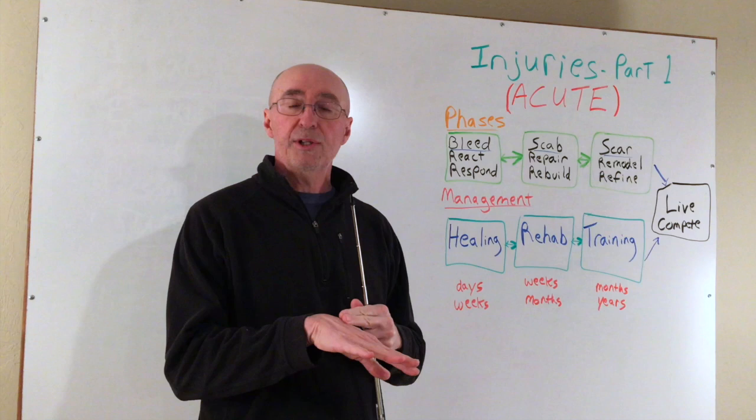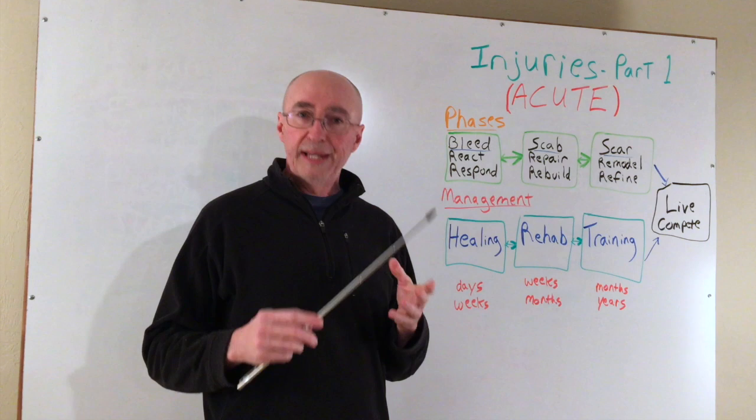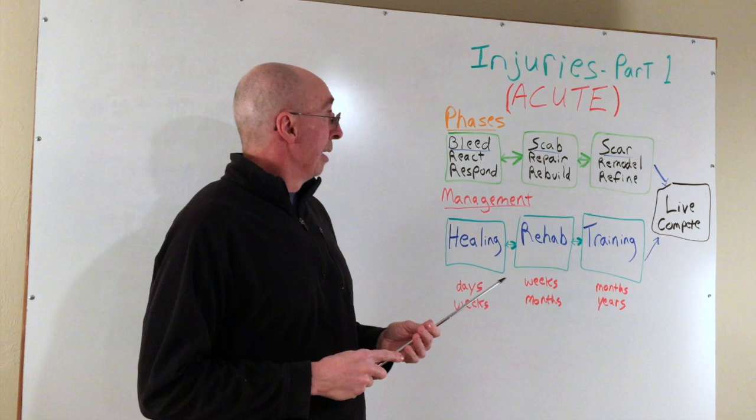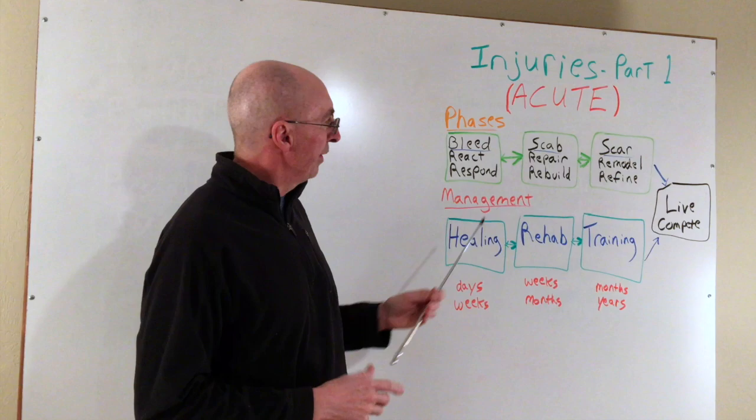When we injure our body on the inside, it's very similar to, say, accidentally cutting ourselves with a knife in the kitchen on the outside of the body. We go through that same process on the inside when tissues are damaged, contused, or torn. The first thing that happens is the body has some bleeding and blood vessel damage, but that's actually how we react and respond to the injury — by creating this cloud of inflammation that initiates the healing process.